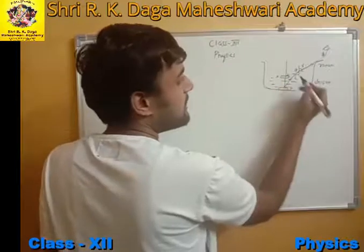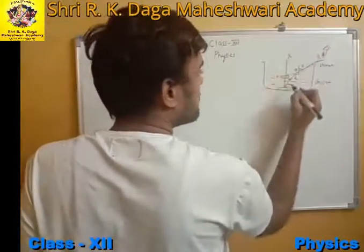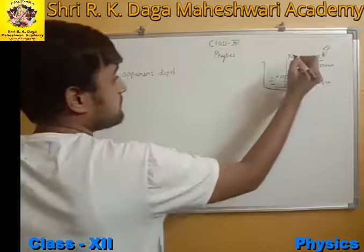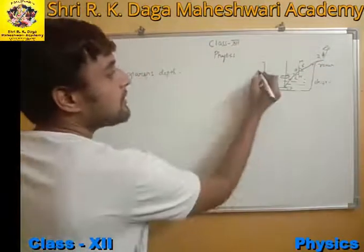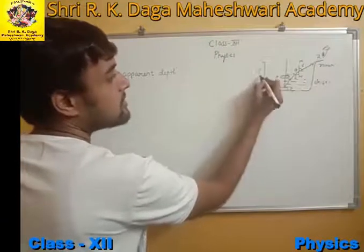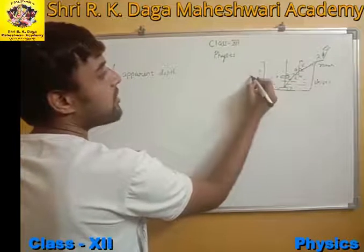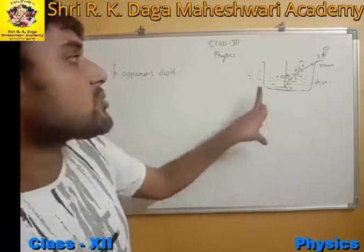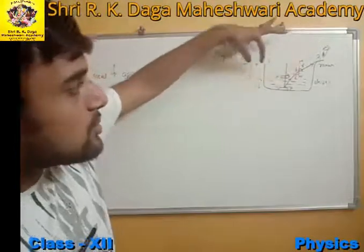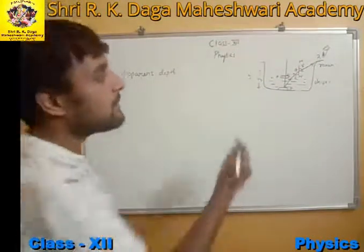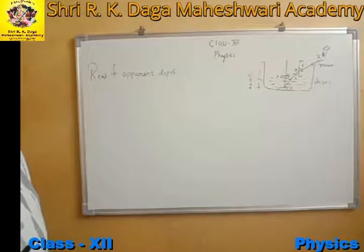Let PQ be the incident ray and QR be the refracted ray, and let ML be the normal. The actual depth of the coin is called the real depth, denoted by h. The depth at which the coin appears to us is called the apparent depth, denoted by h'. The difference between the two is denoted by small d.